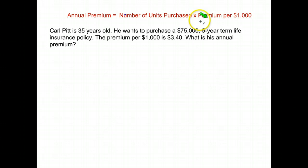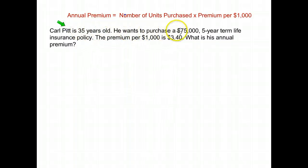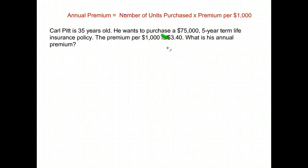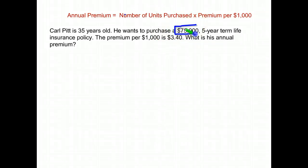The amount they quote you is for every thousand dollars of coverage you want. So let's figure this one out. Carl Pid is 35 years old and he wants to purchase a seventy-five thousand dollar five-year term life insurance policy. The premium per thousand dollars is three dollars and forty cents. What's his annual premium?